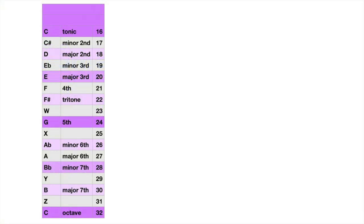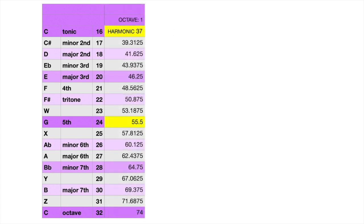To do that, we start with a chromatic scale between 16 and 32 in a spreadsheet. In the next column, we'll start a new tonic frequency at 37.